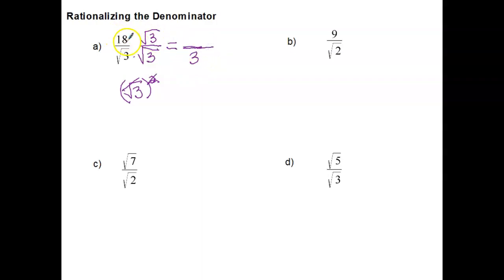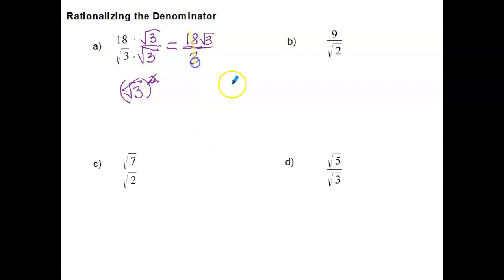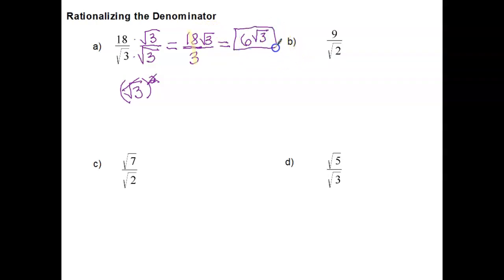In the numerator, just like in the previous lesson, when you have a number times a radical, you can't multiply the number times the number under the radical sign, because that radical doesn't actually represent the number 3 — it's representing a different number. So we just write them right next to each other: 18 radical 3. The last thing we need to check is whether anything can be simplified. We look at the 18 and the 3 — ignoring the radical — and 18 divided by 3 is 6. So we keep radical 3, giving us 6 radical 3 as our answer.